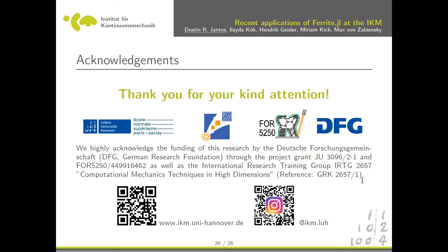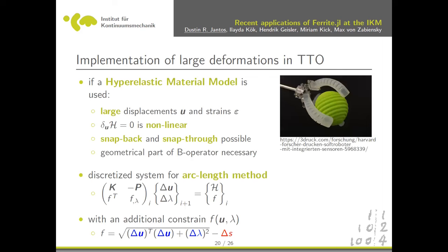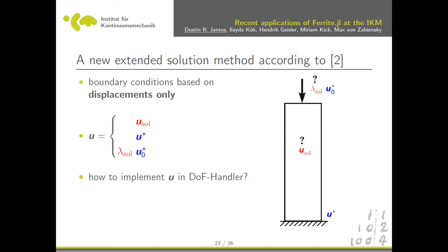Audience question: can you say more about the struggles with the DoF handler — also, how do you enforce displacement constraints in the arc length method? The respondent says they've mostly done force-controlled arc length. The issue is that in force-controlled, you just recompute the residual vector, but displacement-controlled changes your system matrix because you get an additional unknown lambda coupled to the displacements.